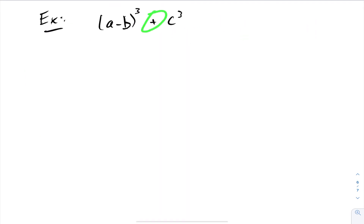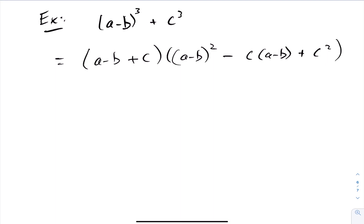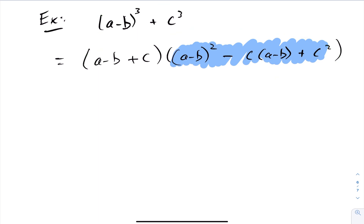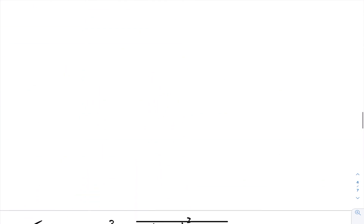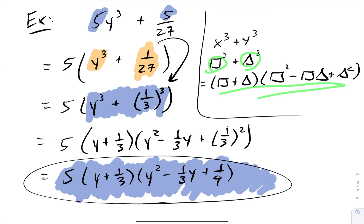For this last problem, we express it as a sum of cubes where the two expressions serve as x and y. It factors into x plus y, times x squared minus the product of the two terms plus the square of the last. At this point there isn't much further simplification, so we leave it in this form. That concludes today's lesson on sum and difference of cubes — express everything as box cubed plus or minus triangle cubed to apply the sum and difference of cubes formula.